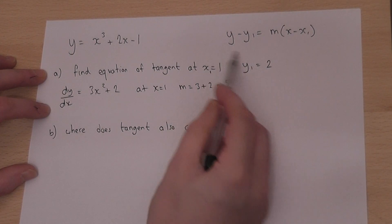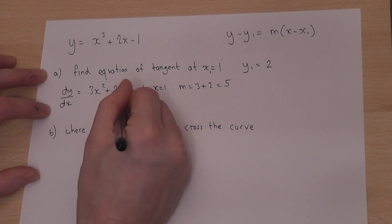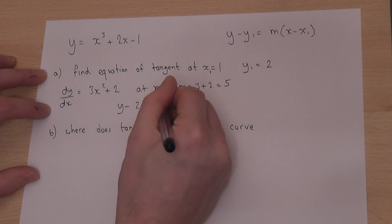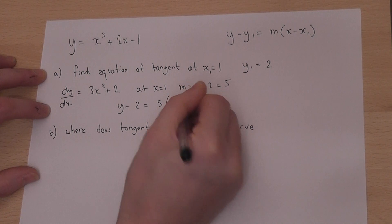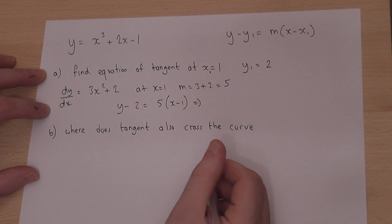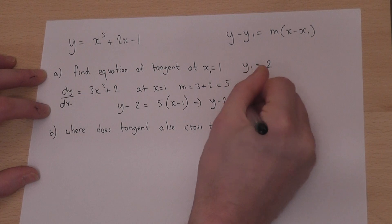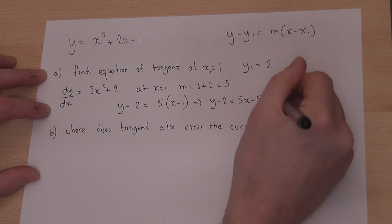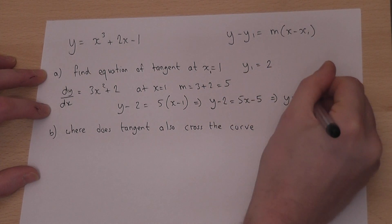So if I put in 1, 2 and 5 into the general equation of a line, I get y minus y₁ equals m times x minus x₁. So I can expand and rearrange that. y minus 2 equals 5x minus 5, so y equals 5x minus 3.